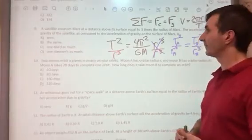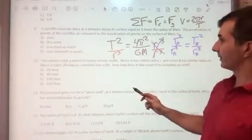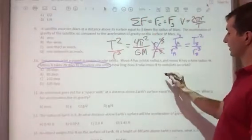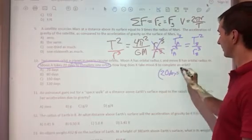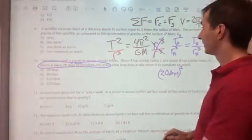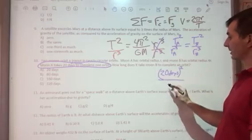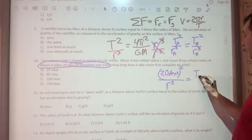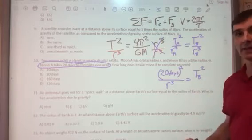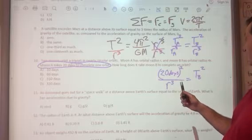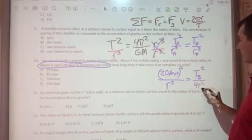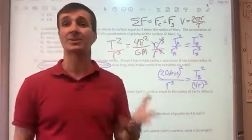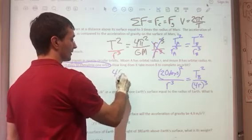We've got a period of 20 days for Moon A, so I'll substitute that: 20 days squared and an orbital radius of A of just R, so R³. Here we're looking for the period of B squared, and the orbital radius of B is four times bigger—it's 4R, so 4R cubed.